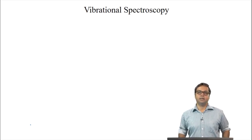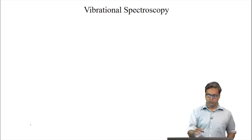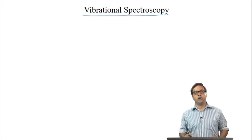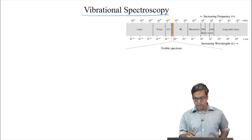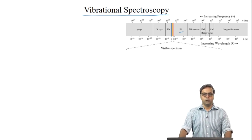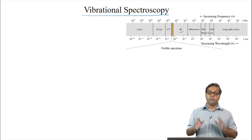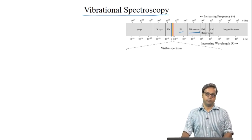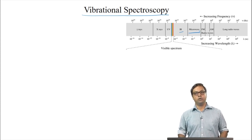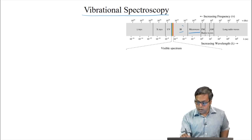Hello everyone. In this lecture, we will start a new module where we will look into vibrational spectroscopy. We already know that the electromagnetic spectrum can be divided into different regions like gamma rays, X-rays, UV, IR, microwave, etc. In the last module, we discussed in detail about microwave spectroscopy, where the frequency of light corresponds to the microwave region. In this module, we will discuss about a different region — the infrared region.